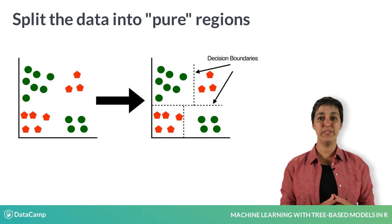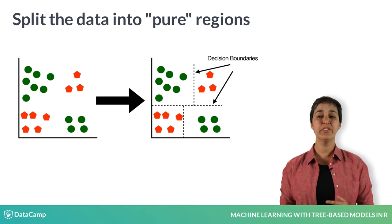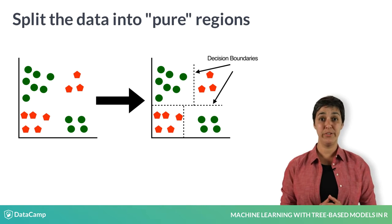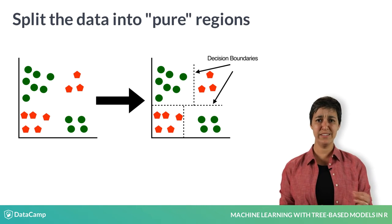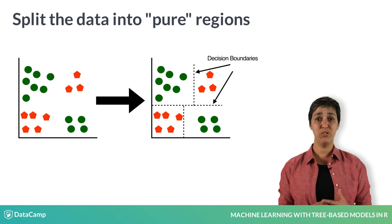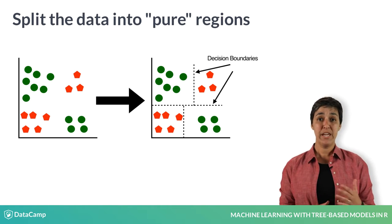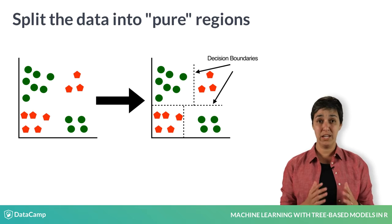Boundaries separating these regions are called decision boundaries, and the decision tree model makes classification decisions based on these decision boundaries. In this diagram, we have an example where we are able to partition the space into regions that are 100% pure, meaning there are only examples from one class in each region.